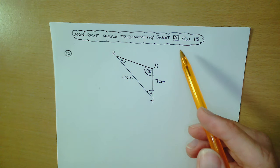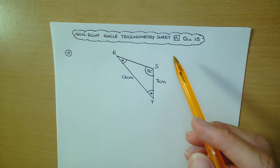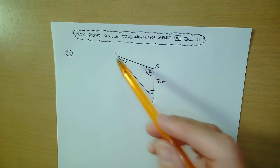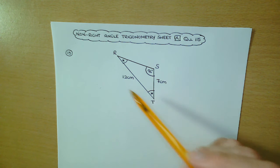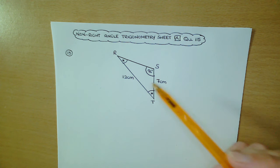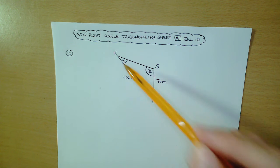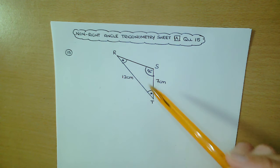Question 15 from the non-right angle trigonometry sheet, section A. They're giving you a triangle. There's no indication that there's a 90 degree angle here, so we're thinking non-right angle trigonometry. We want to find two angles: angle R and angle T.